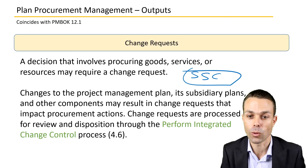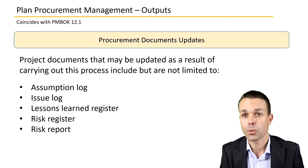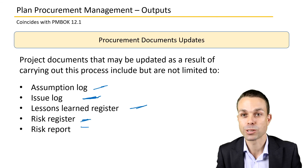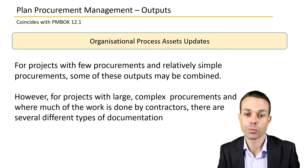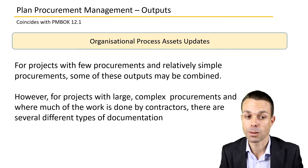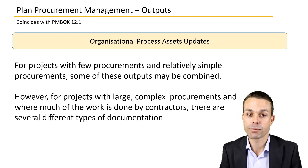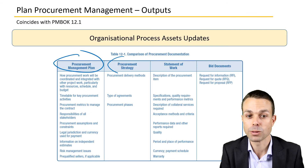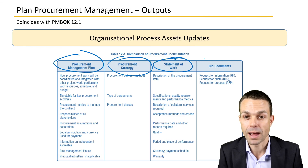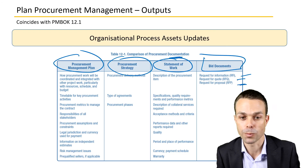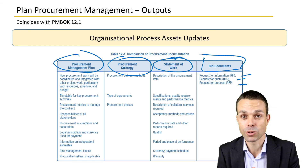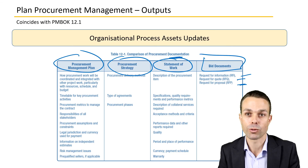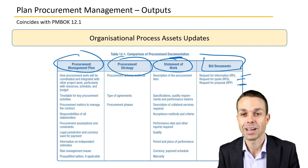Change requests will happen if we need to make changes to scope, schedule, or cost along the way, going through the change request process. Project document updates include the assumption log, any issues raised, lessons learned, the risk register, and the risk report. For projects with few or simple procurements, some of these outputs may be combined, but for large complex procurements where much of the work is done by contractors, there may be several types of documentation — procurement management plan, procurement strategy, statement of work, and bid documents such as RFI, RFQ, or proposal. This is what happens when we're asking someone else to do the work, and that's plan procurement management as part of the PMBOK.